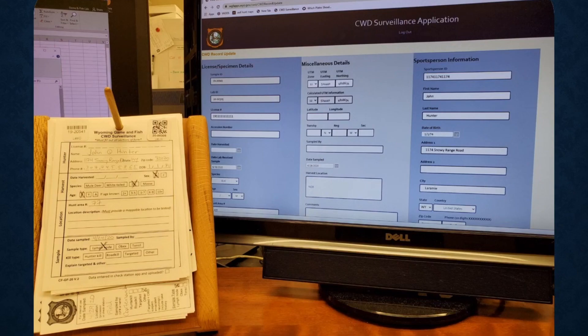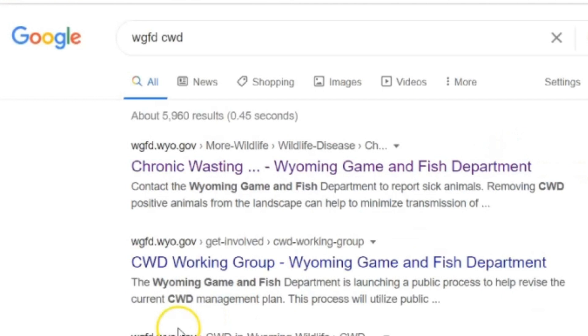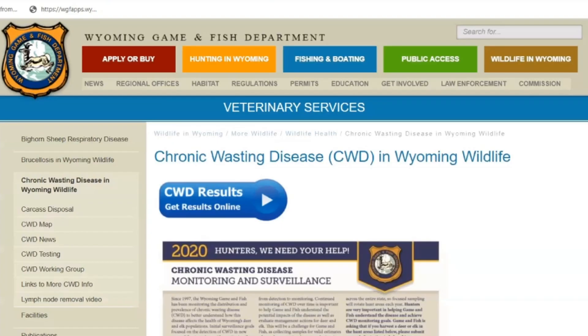Finally, sample tag info and result data is entered into the Wyoming Game and Fish Chronic Wasting Disease web app. Go online to the Wyoming Game and Fish Department website to get your results.